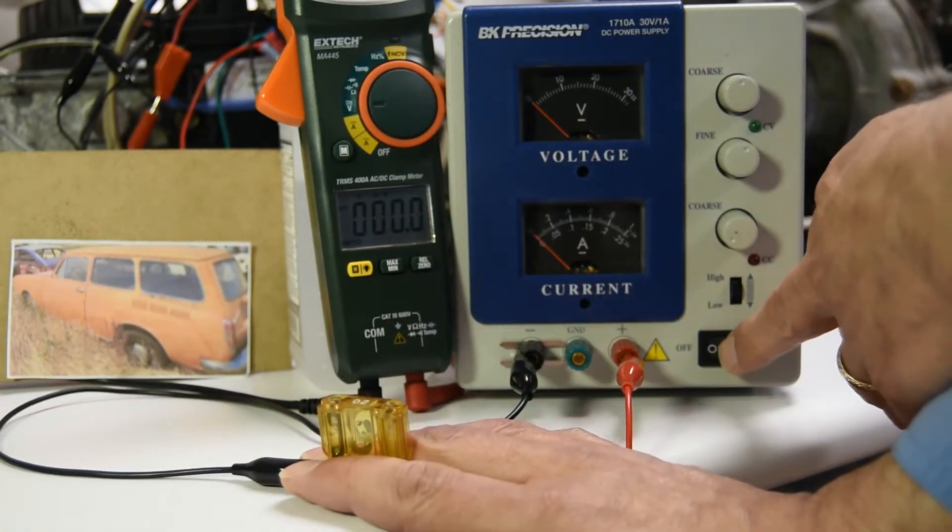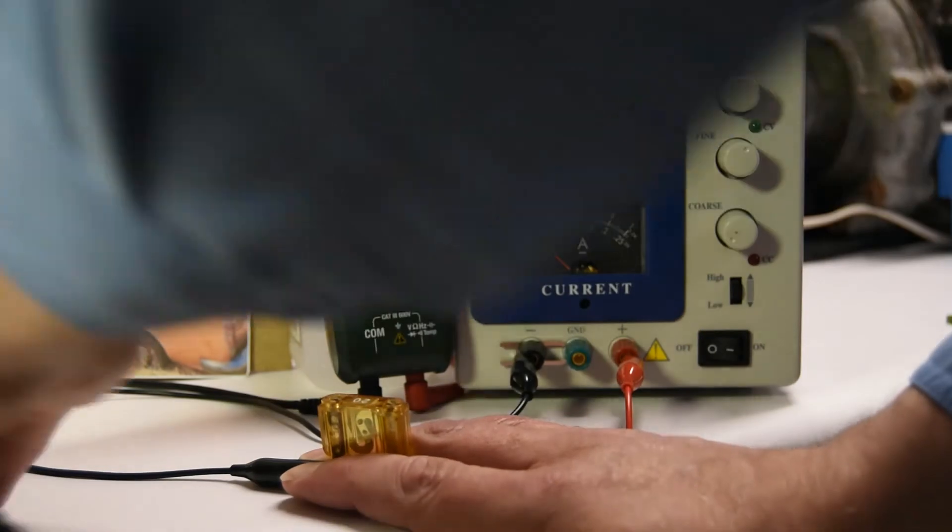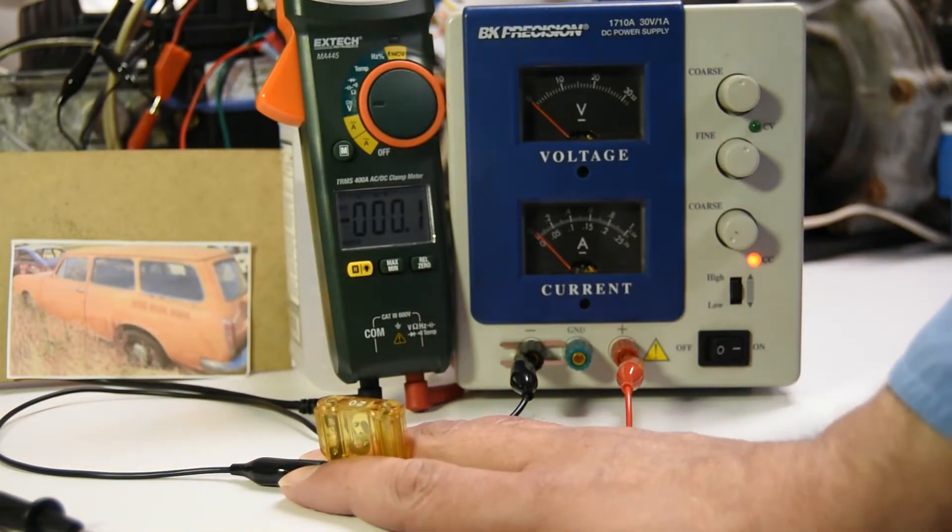So I'm going to turn this on. Right now, I've got my current limit set really low. I have no voltage because my meter leads aren't connected to anything. They're just hanging out over here on the left hand side. I'll turn my meter on.